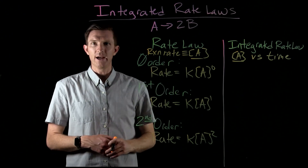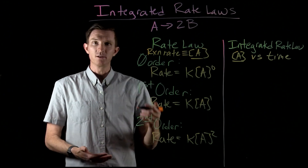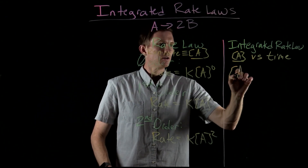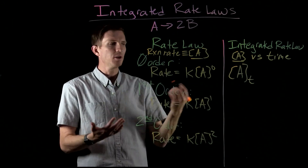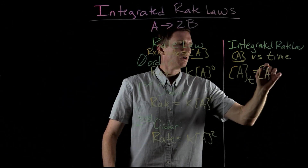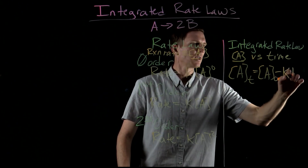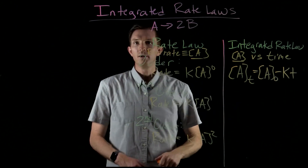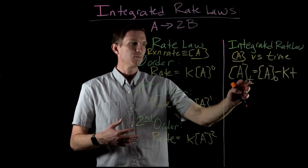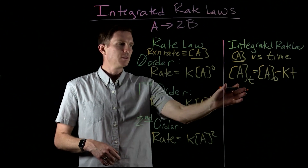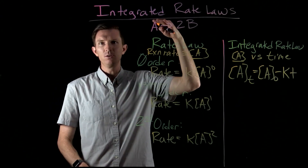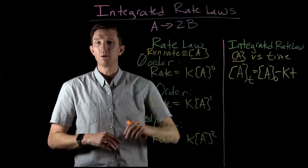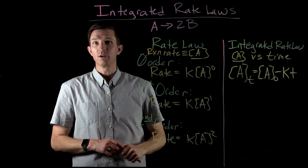For a zero order reaction, if we integrate this relationship, we get: the concentration of A at some time, A sub T, equals our initial concentration of A minus K times T. We see a linear decrease — a consistent, constant decrease in the concentration of A that doesn't depend on the original concentration. For example, if I start at 5 molarity and lose 1 molarity per minute, it doesn't matter whether I start at 5 or 3 — it's always 1 molarity per minute, because there's no dependence of rate on the concentration of A.